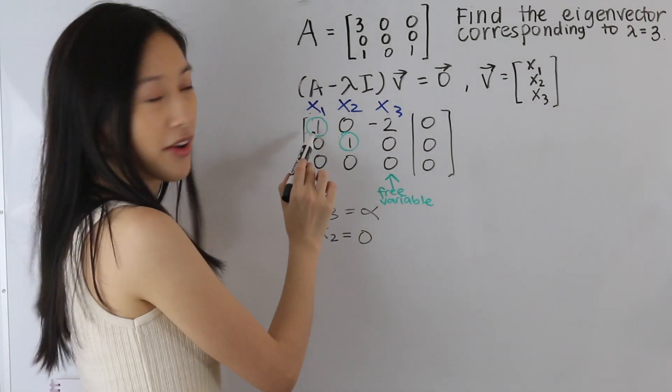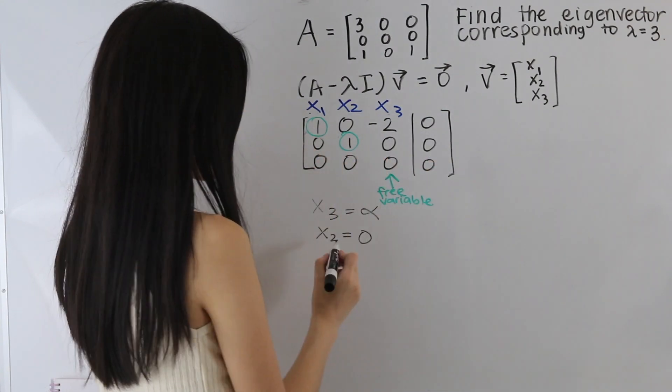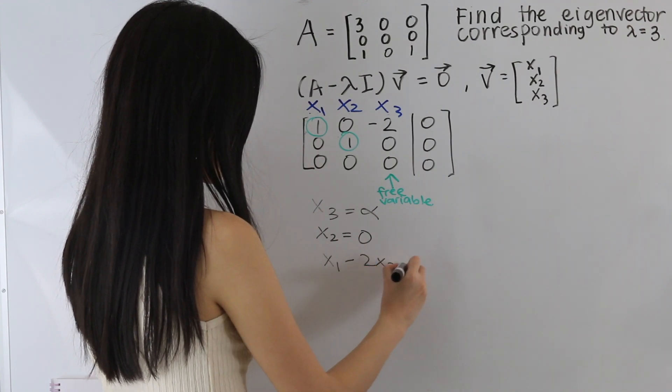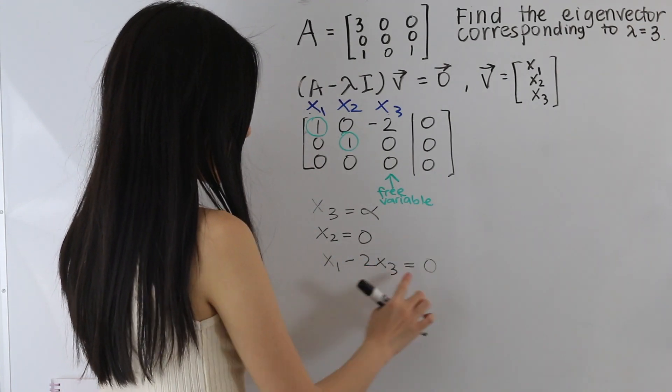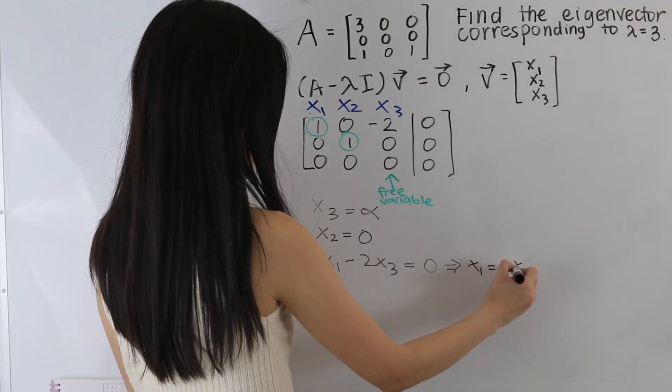And from this row right here, we have x1 minus 2x3 is equal to 0. And we can rewrite this as x1 is equal to 2x3.